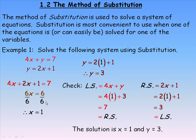Also, if we were to graph these two lines, this solution also represents the ordered pair where they would cross.